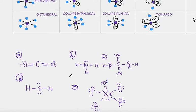Notice here I already gave you Lewis dot structures. You should know that the most important part about predicting the correct shape is actually drawing the correct Lewis dot structure. If you're not sure how to do that, go to my video where I explain how to draw Lewis dot structures, and it should really help you correctly draw them so that you can correctly predict the shape. Here, I have already drawn the correct Lewis dot structures, so we will just use the table to predict the shape.